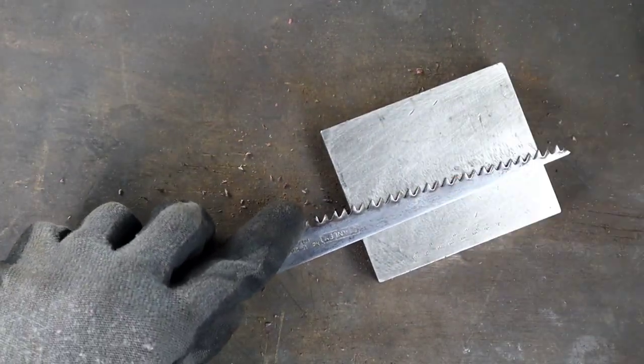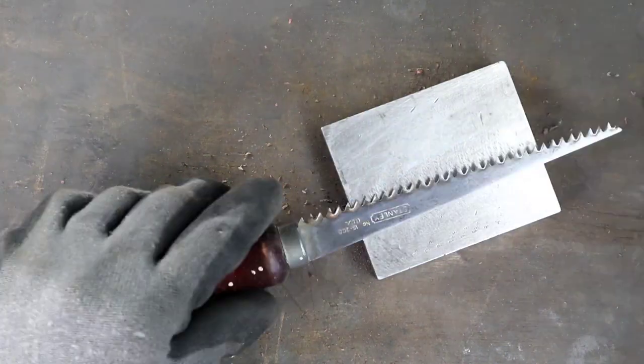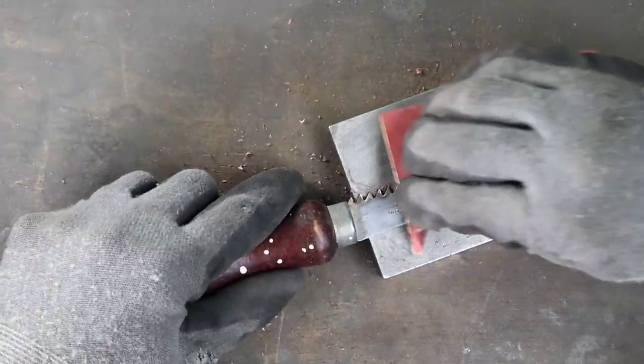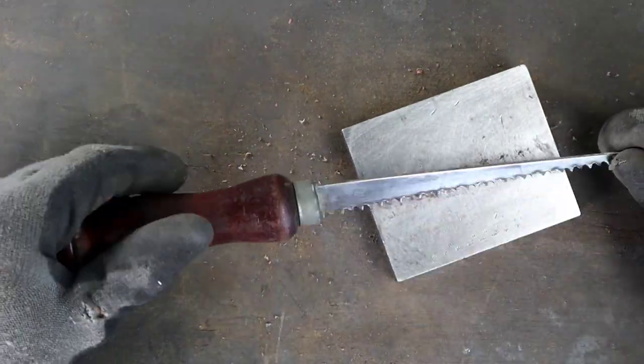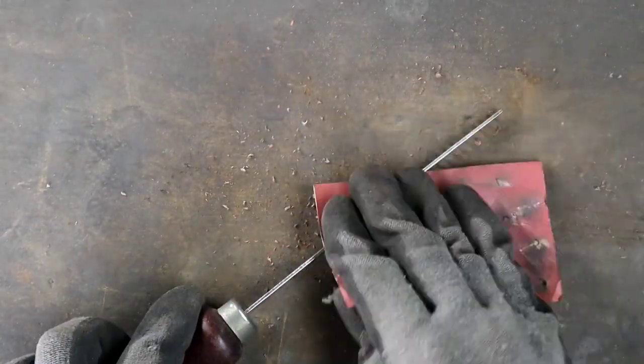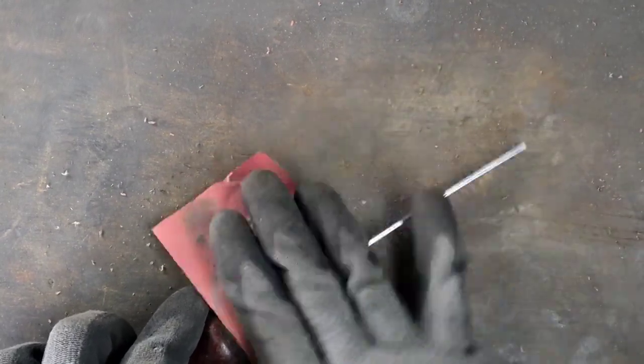While Stanley has been around since 1843, this 15-206 wallboard saw is a relatively new addition to their tool line. It was introduced as a direct upgrade to the keyhole saw, which has a 10 to 12 inch blade, which was often hard to use because it flexed while you were cutting due to its long size.